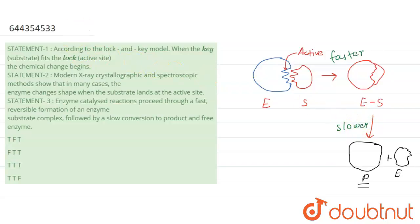So we'll first read all the statements. The first statement says that according to lock and key model, when the key (substrate) fits into the lock (that is active site), the chemical changes begin. Yes, you can see here the substrate is fitting into the active site of the enzyme, that is the lock. So yes, the first statement is right.